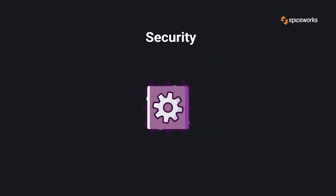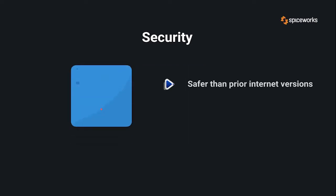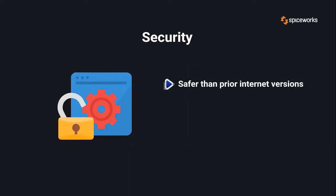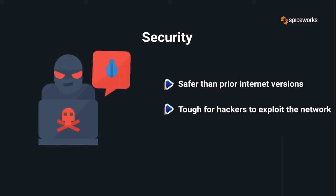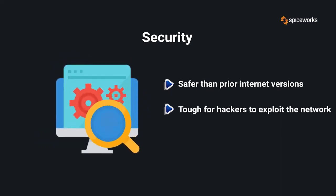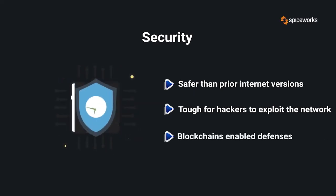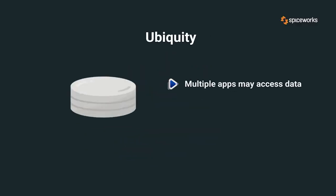Security: due to blockchain technology and its autonomous structure, Web 3 will also be safer than prior internet versions. Hackers will find it exceedingly tough to exploit the network, and even if they do, their activities will be logged. In a decentralized system, hacks are still plausible, although most blockchains have developed defenses against such an occurrence.